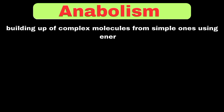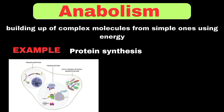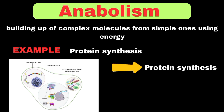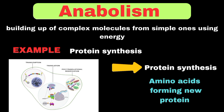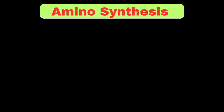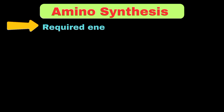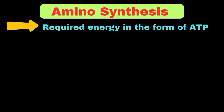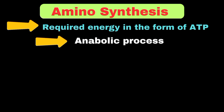Anabolism can be defined as the building up of complex molecules from simple ones using energy. For example, in protein synthesis, when we eat protein-rich foods, our body breaks them down into amino acids, which are then used to build new proteins. This process requires energy in the form of ATP. Since it builds complex proteins from simple amino acids using energy, it's an anabolic process.